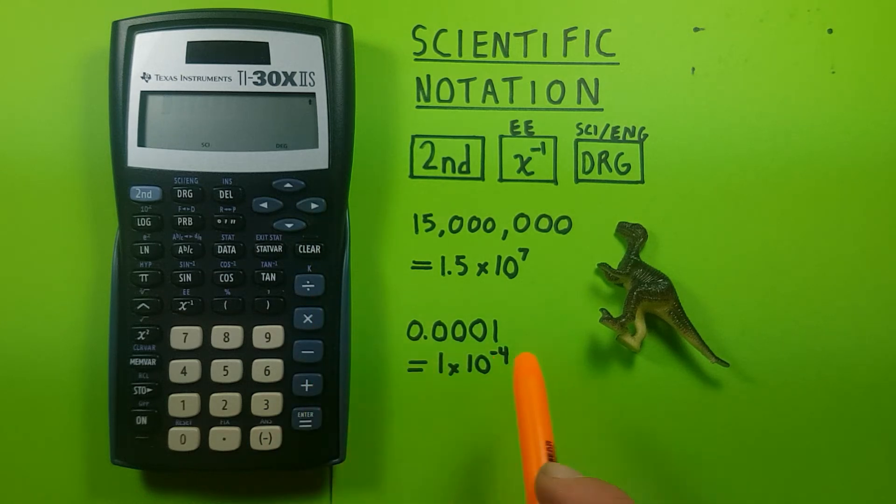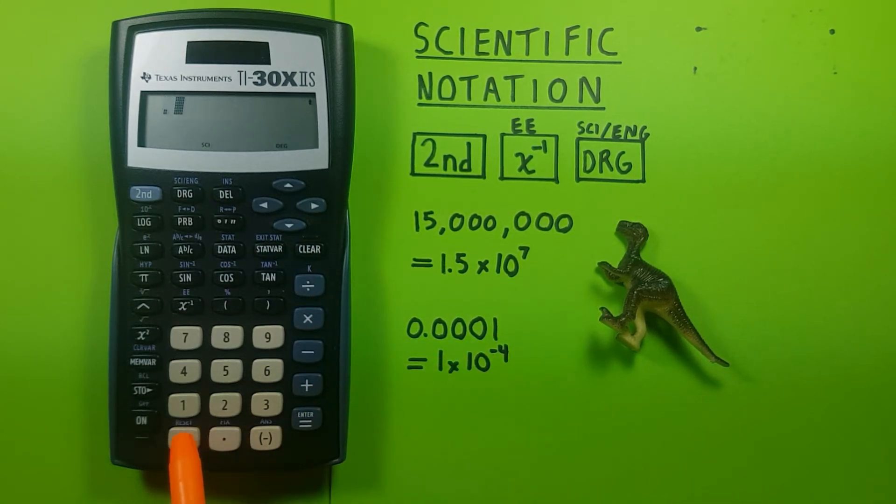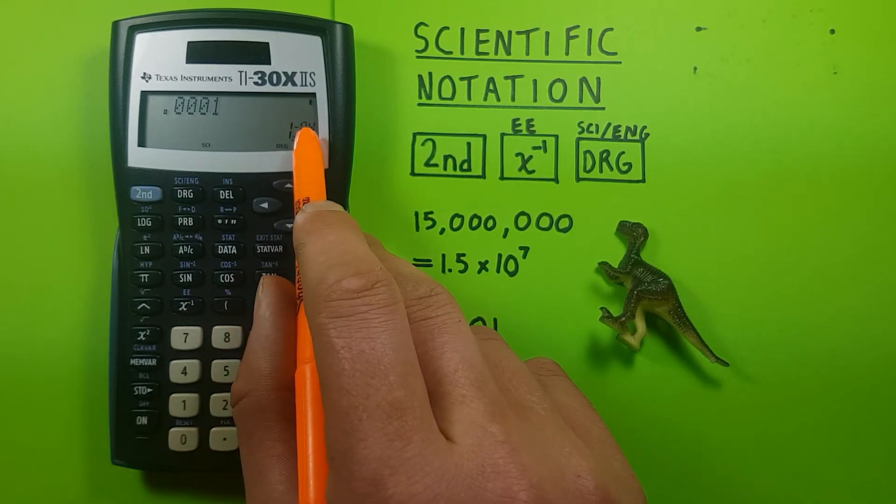Again, we can do this with small numbers. Let's say we're given 0.0001, enter, and it gives us scientific notation.